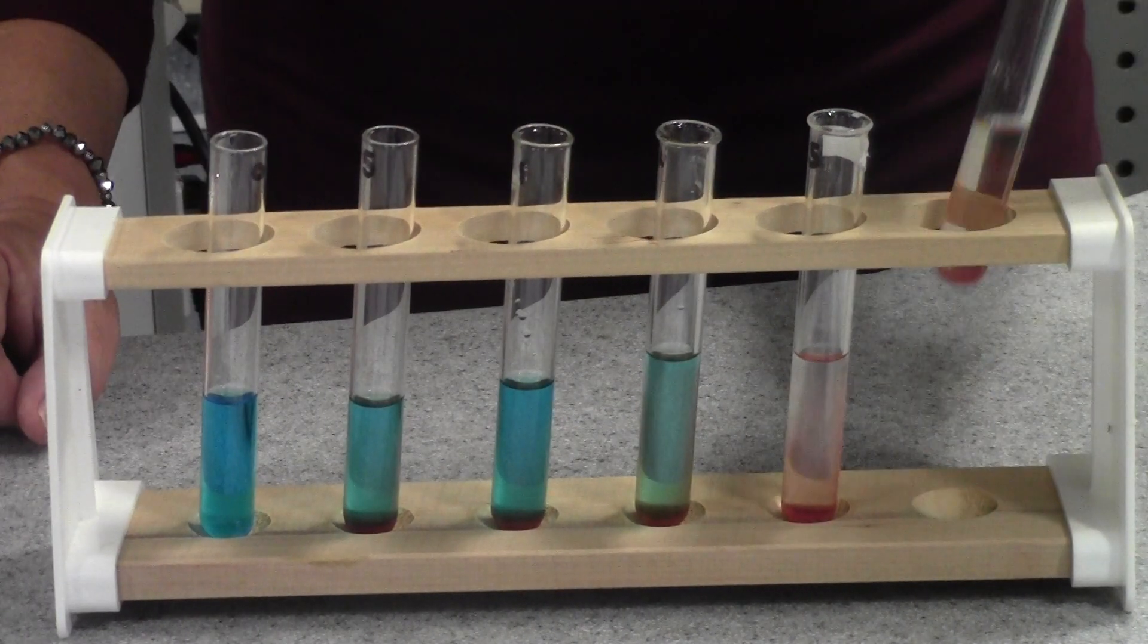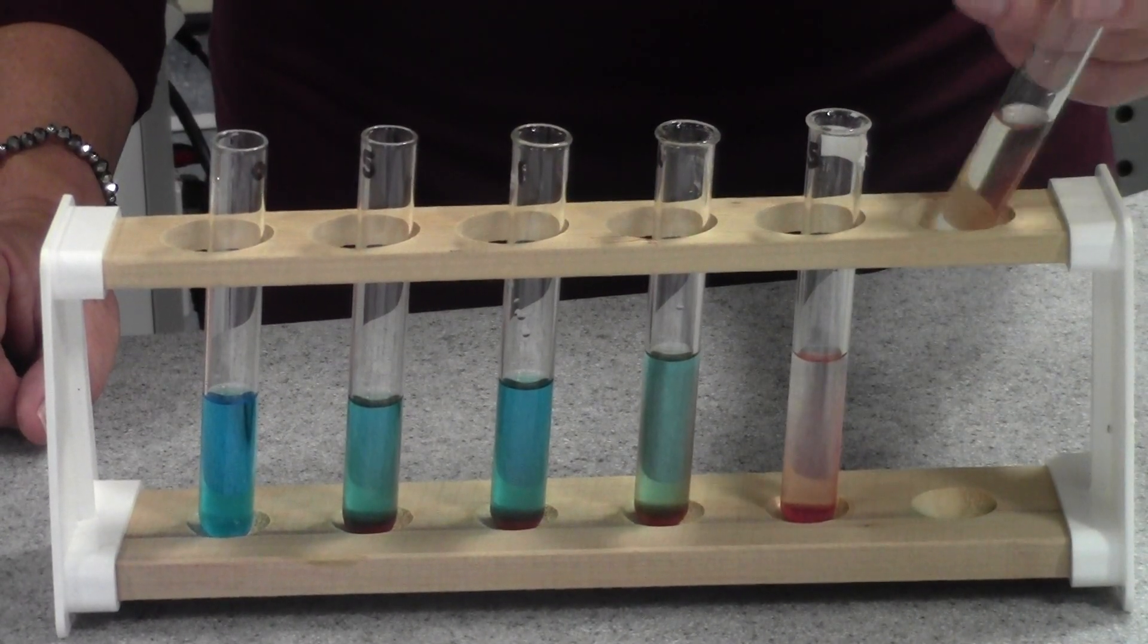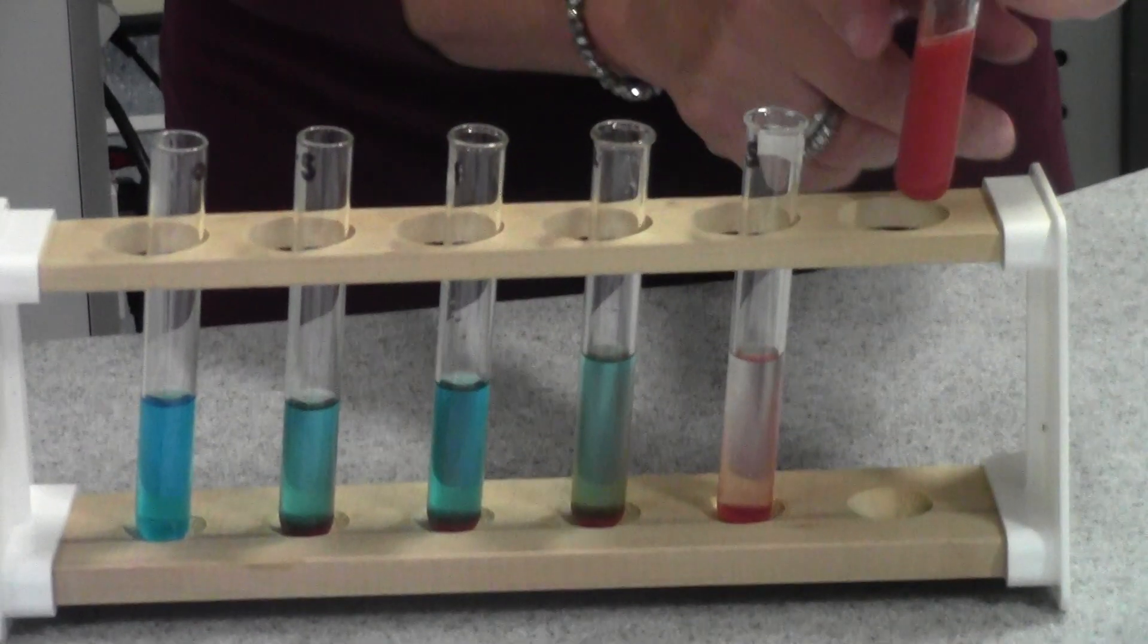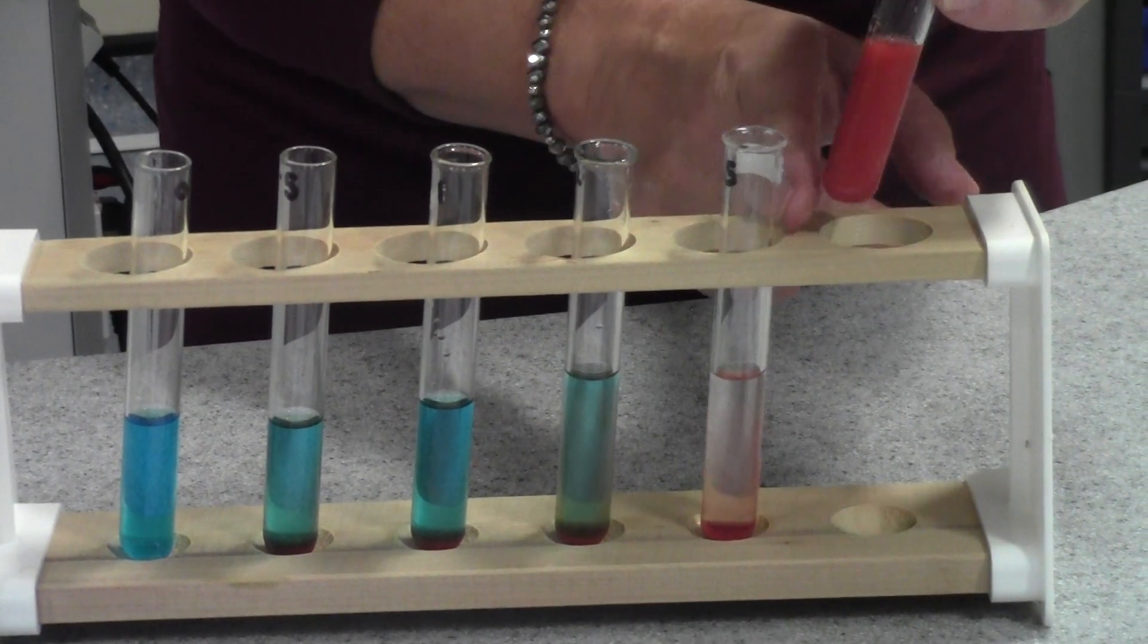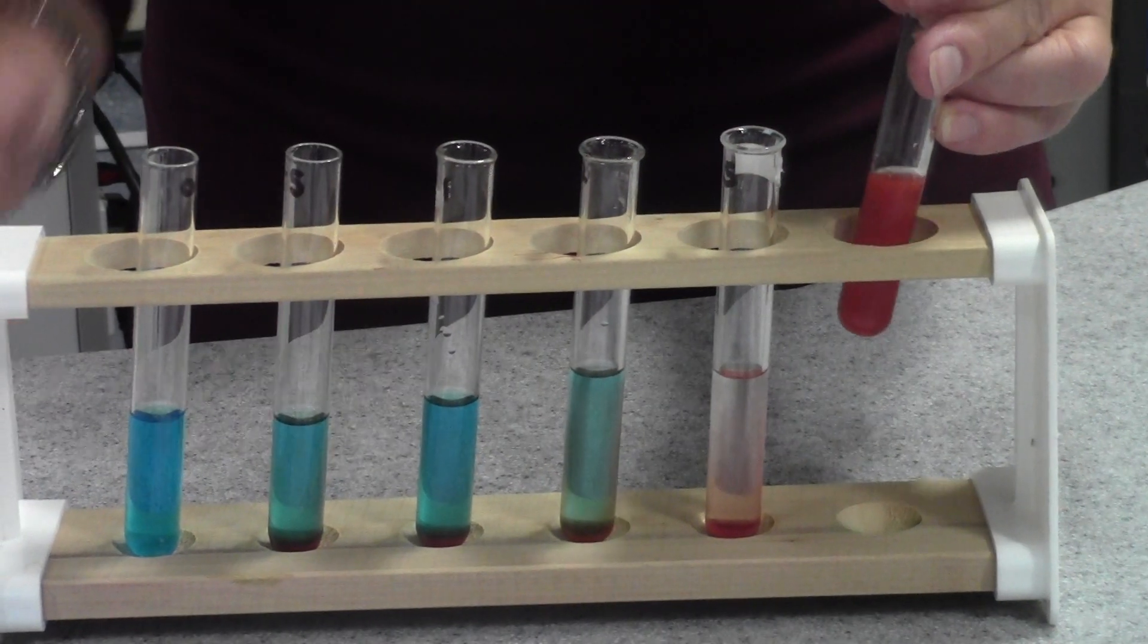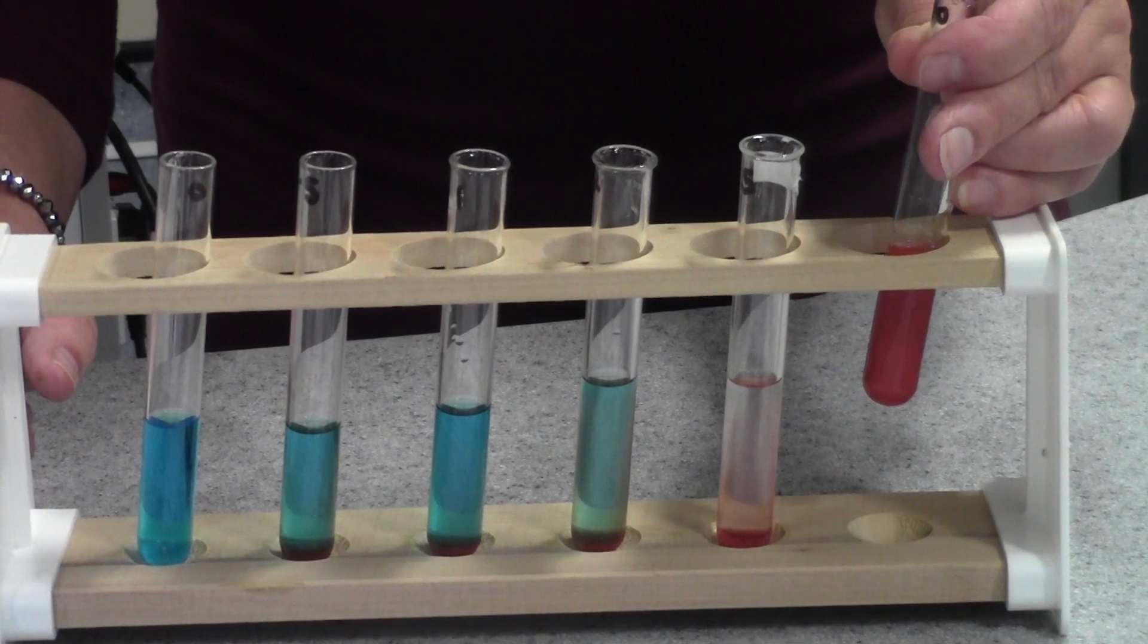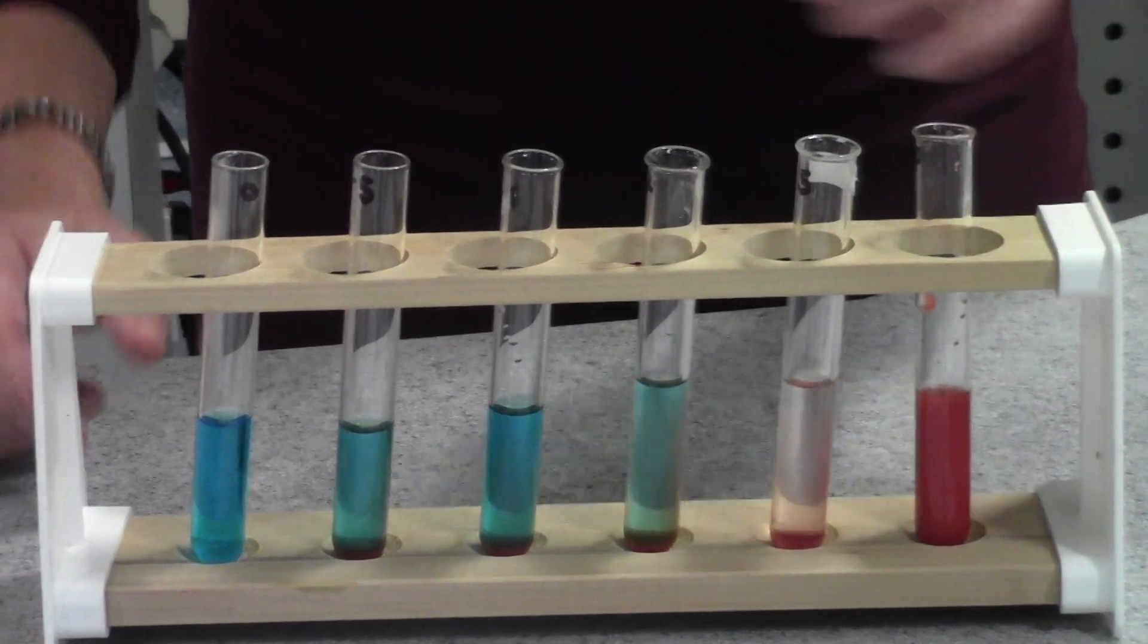Whereas at the other end of the scale, this was the 10% glucose solution. I'm just going to give it a little shake because it's settled out, and you can see in there we've got quite a lot of brick red precipitate because a lot of the Benedict's reagent has reacted with the reducing sugar that was in that sample.